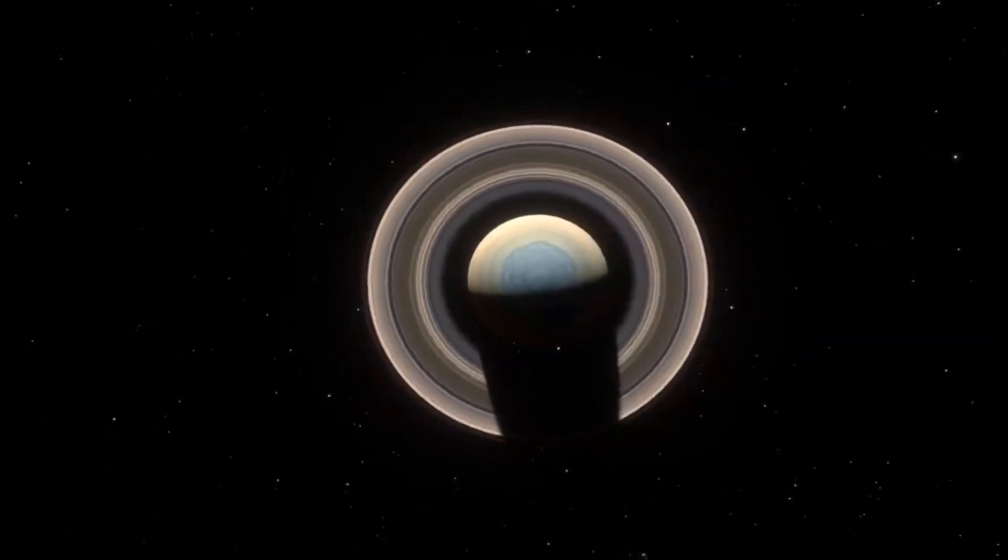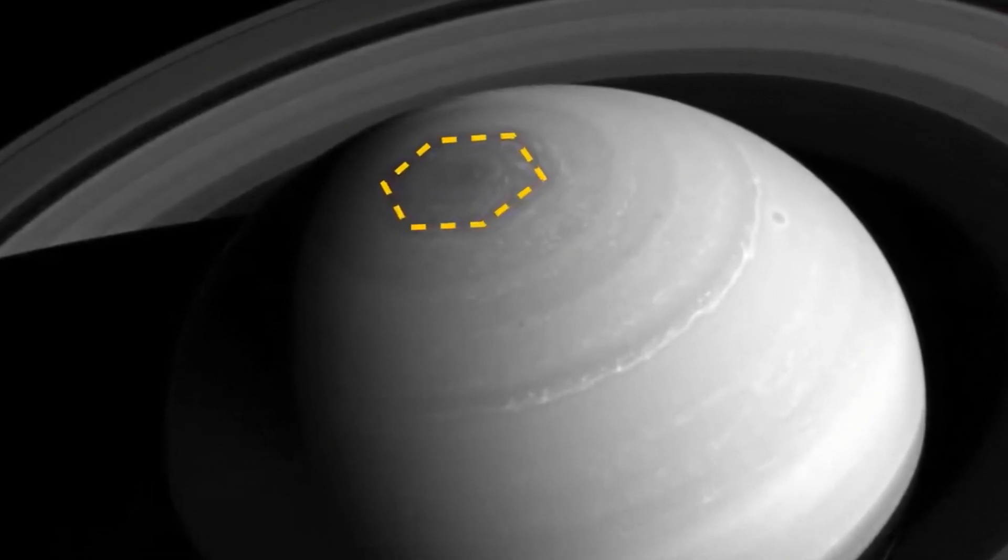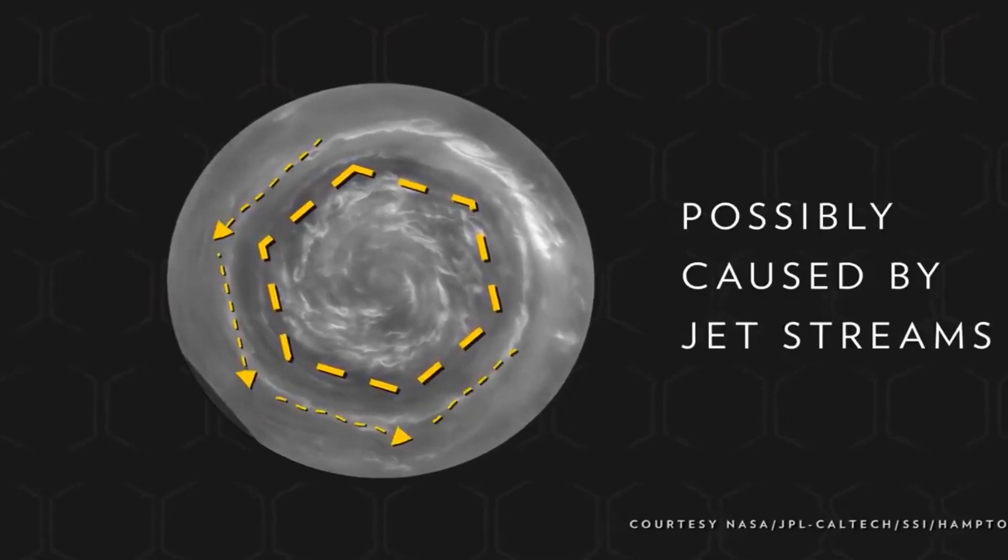The clouds are decorated by many small-scale features such as red, brown and white spots, bands, eddies and vortices that vary over a fairly short time. Saturn cannot support life as we know it, but some of Saturn's moons have conditions that might support life.